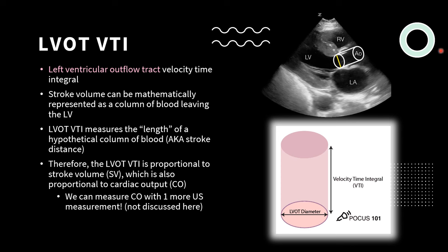The LVOT VTI is the Left Ventricular Outflow Tract Velocity Time Integral — the longest acronym in all of point-of-care ultrasound. To understand the LVOT VTI, you have to understand the stroke volume, which is the amount of blood that exits the LV during each systolic beat. This can be mathematically represented as a column of blood leaving the LV. That column has two components: the LVOT diameter and the LVOT VTI — the length of a hypothetical column of blood, sometimes referred to as the stroke distance.